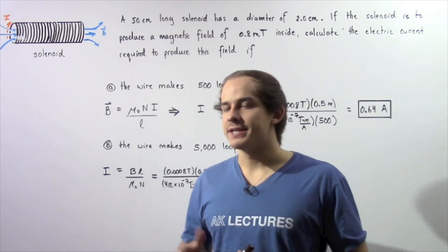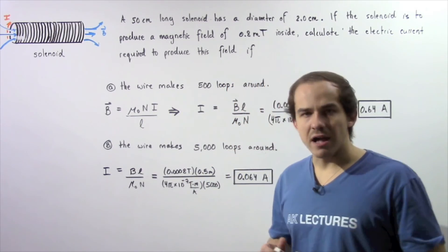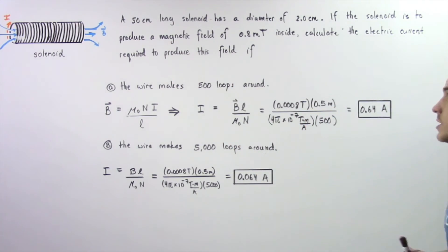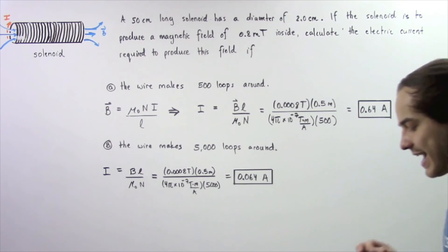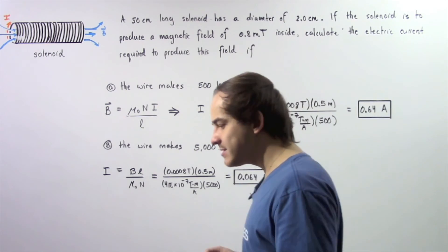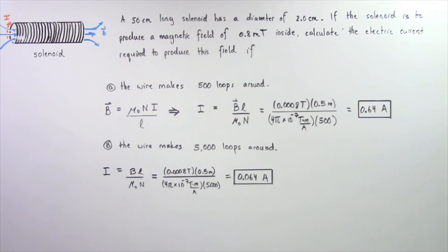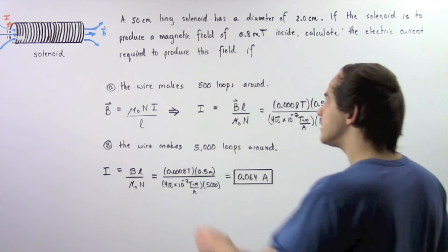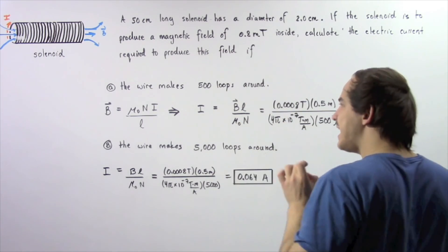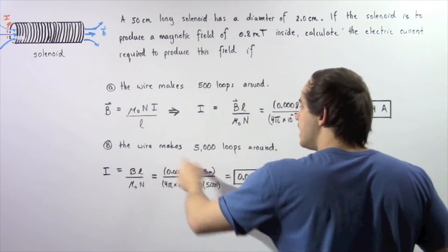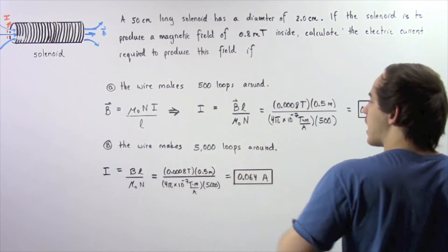Let's examine the following example that deals with solenoids. Suppose a 50 centimeter long solenoid has a diameter of 2 centimeters. If the solenoid is to produce a magnetic field of 0.8 milliteslas at the center, we want to calculate the electric current required to produce this magnetic field if in part A the wire makes 500 loops, and in part B the wire makes 5,000 loops.